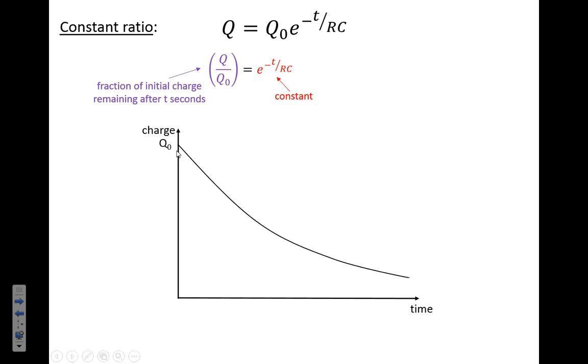We start with Q naught and it will decay down here. So this is the exponential curve. If after time T we measure how much charge we've got, we find it's going to be Q. So if we did Q divided by Q naught, we'd end up with this proportion remaining.